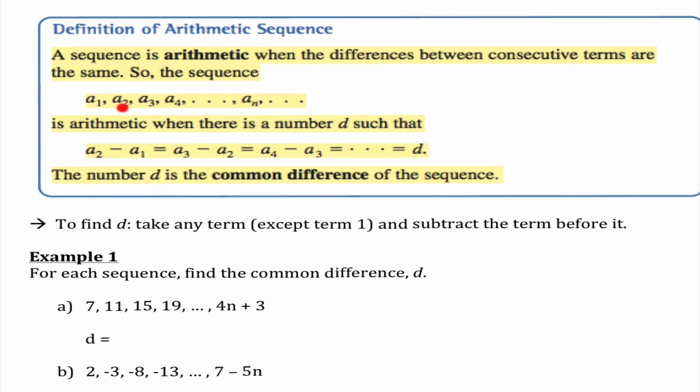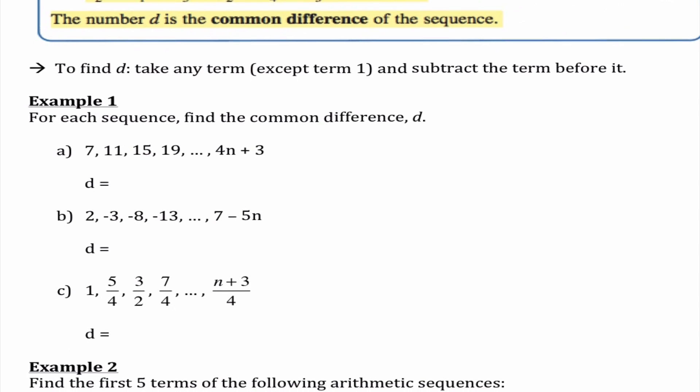So the sequence a sub 1, a sub 2, a sub 3, a sub 4, up through a sub n is arithmetic when there's a number d such that a sub 2 minus a sub 1 equals a sub 3 minus a sub 2 equals a sub 4 minus a sub 3 equals d. We call that the common difference. Basically d is any term minus the previous term.